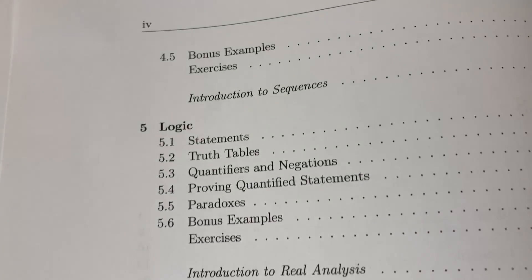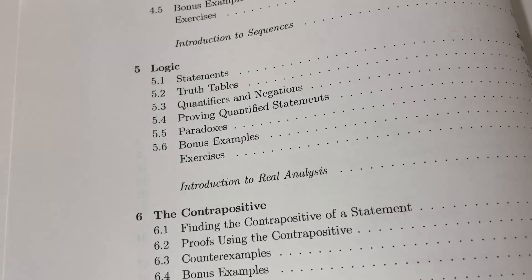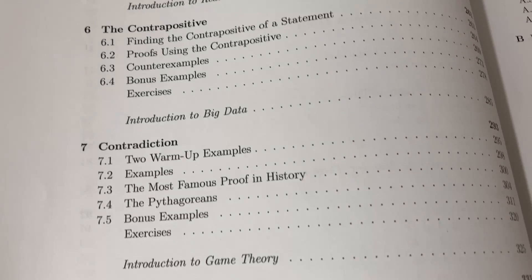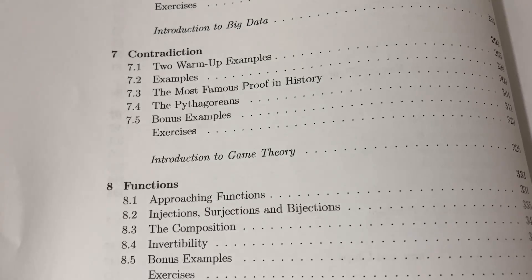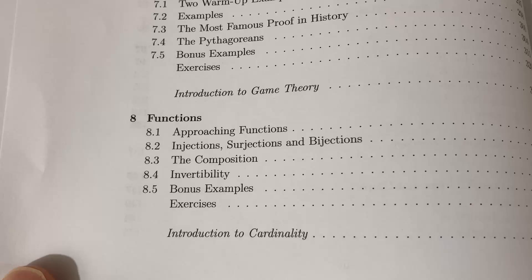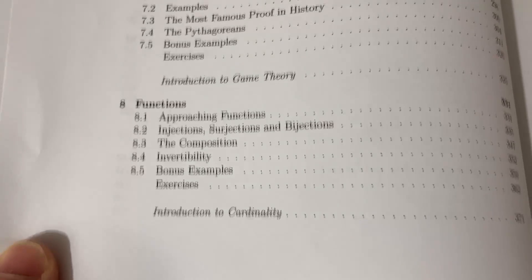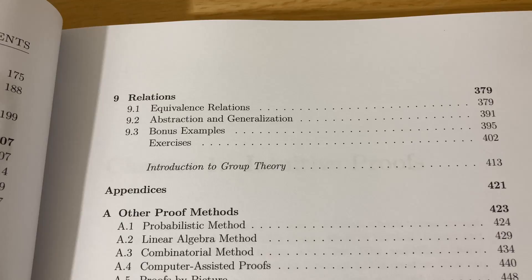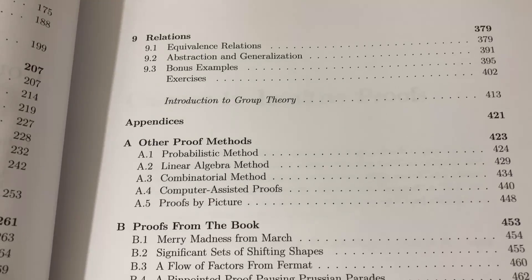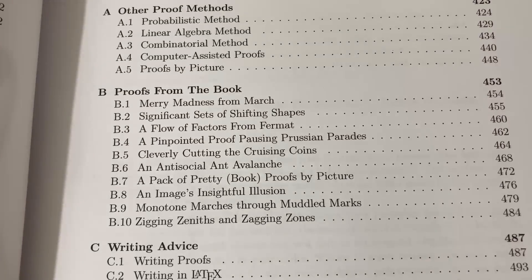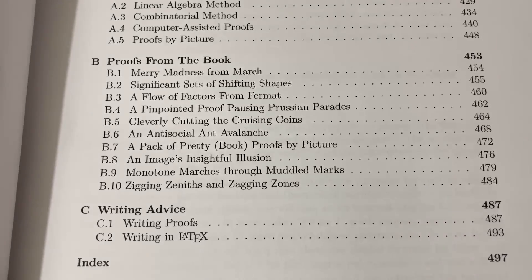An introduction to sequences, logic, some real analysis, the contrapositive, big O notation, contradiction, game theory, functions, and then some cardinality. Again, the order there makes perfect sense. It's relations, and then some group theory, and then he has other proof methods, and then he has some other cool topics thrown in here at the end.